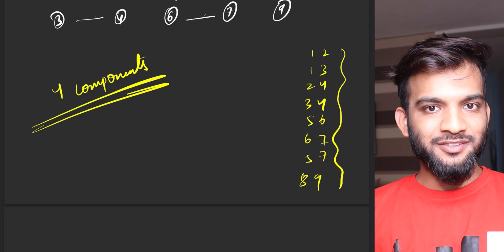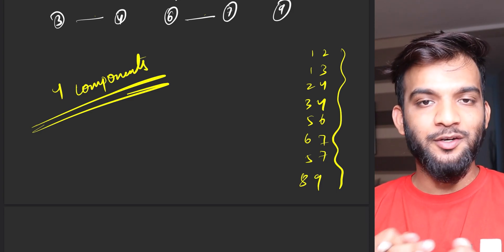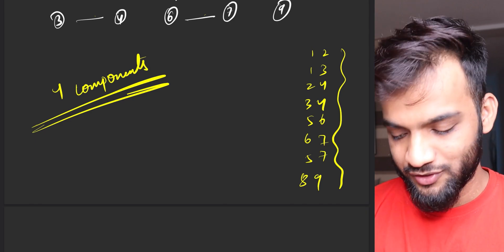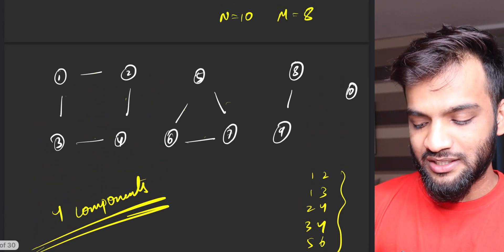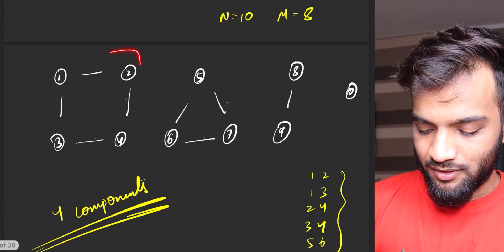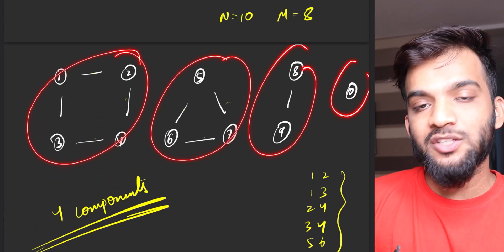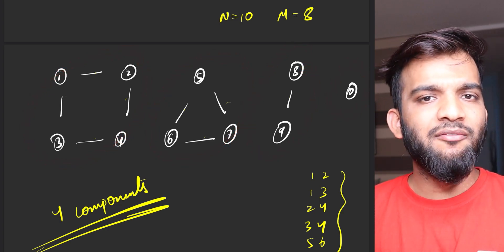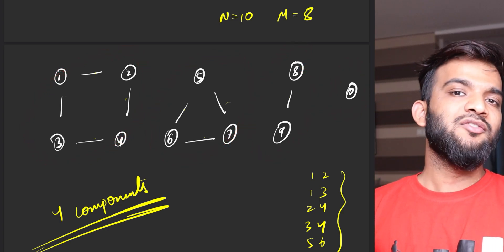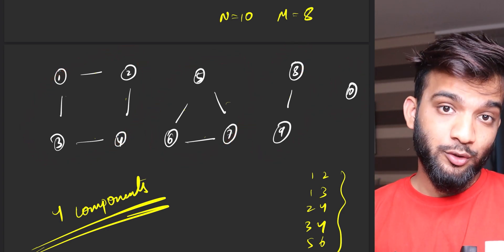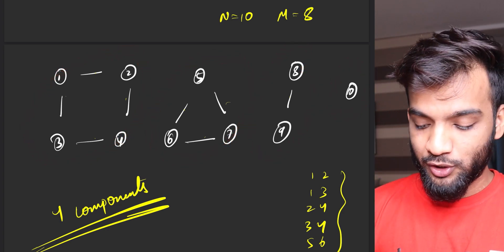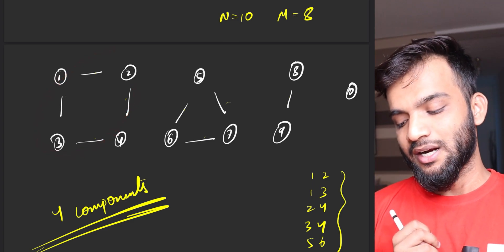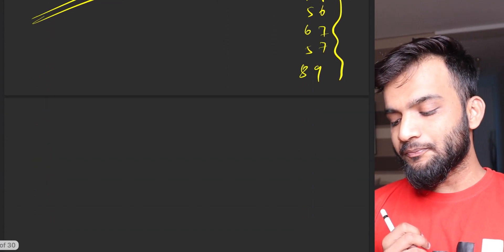Instead of pieces, there are four components. The graph has been broken down into four different components. So next time you see two different portions that are not connected, don't say those are not graphs. These are four different components of a single graph. They could have been four different graphs, but according to the question and the input you can see them as part of a single graph.